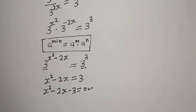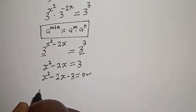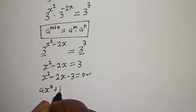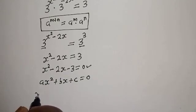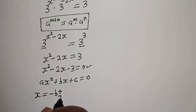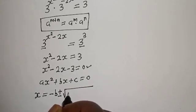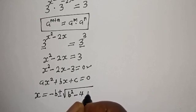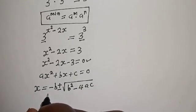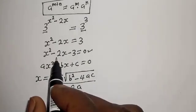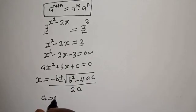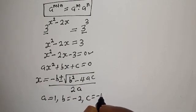Let's solve this using the quadratic general formula. From the quadratic general formula, for as squared plus bs plus c equals 0, s is equal to minus b plus or minus square root of b squared minus 4ac, all over 2a. From this equation, a is equal to 1, b is equal to minus 2, and c is equal to minus 3.